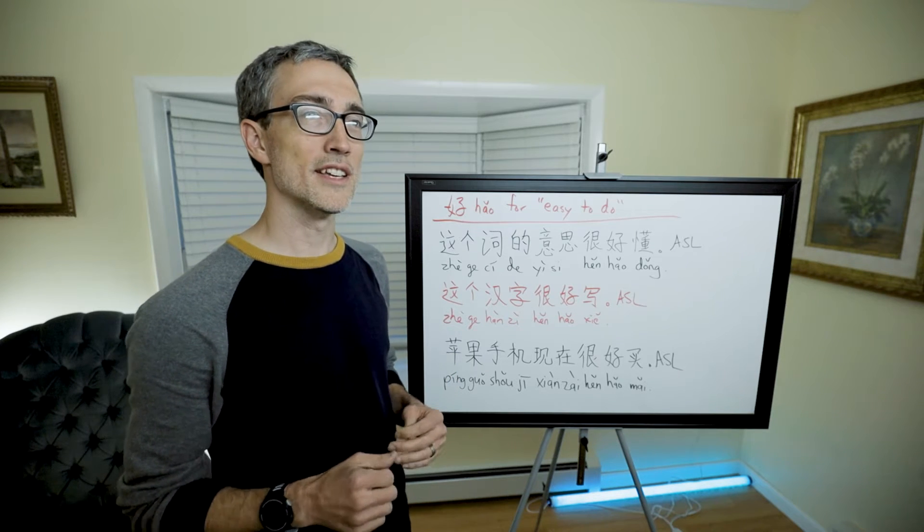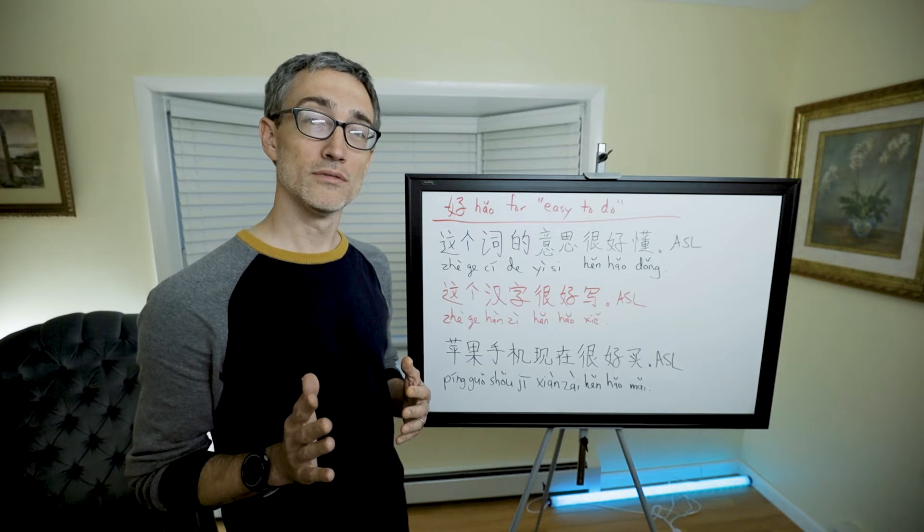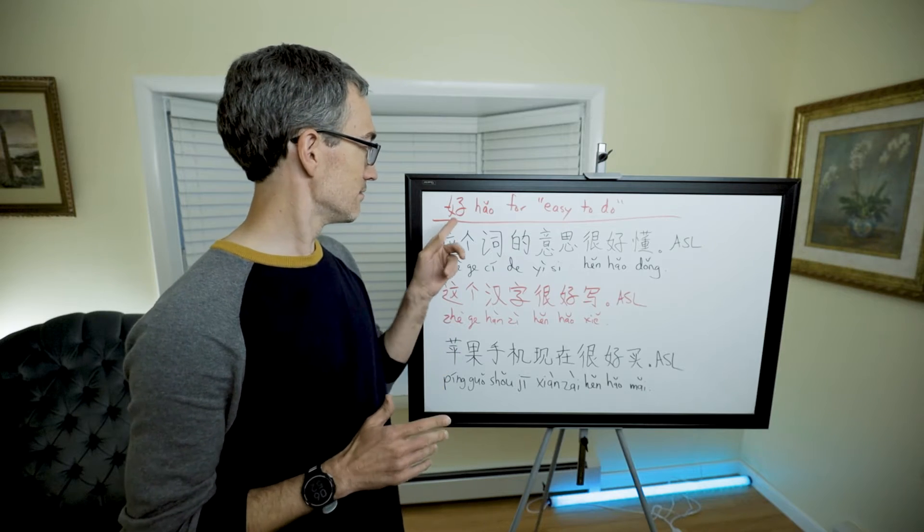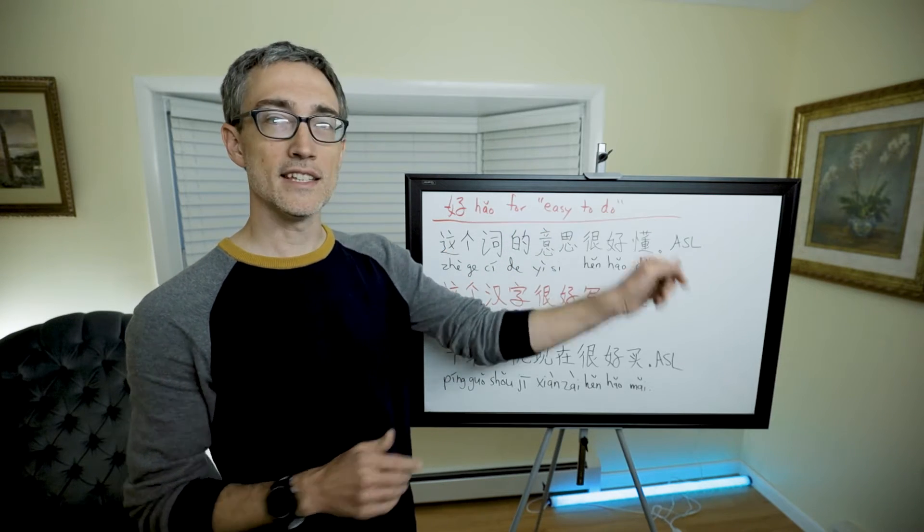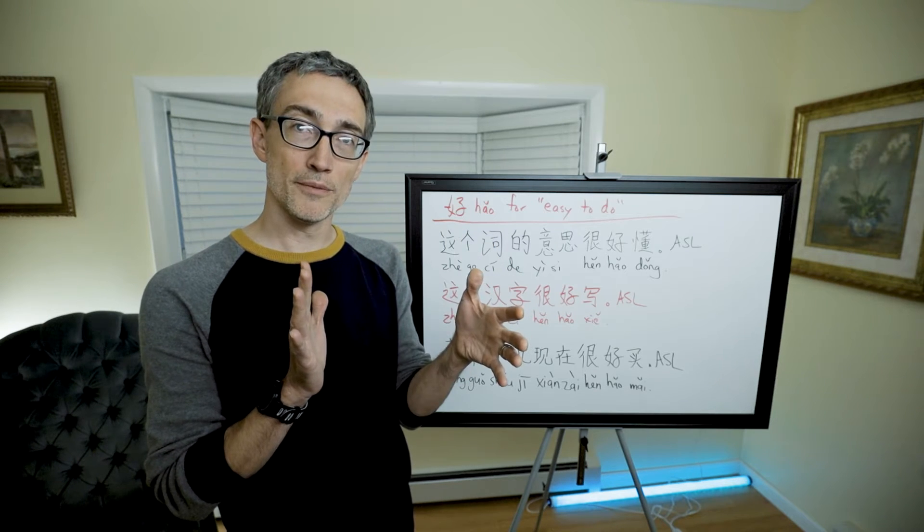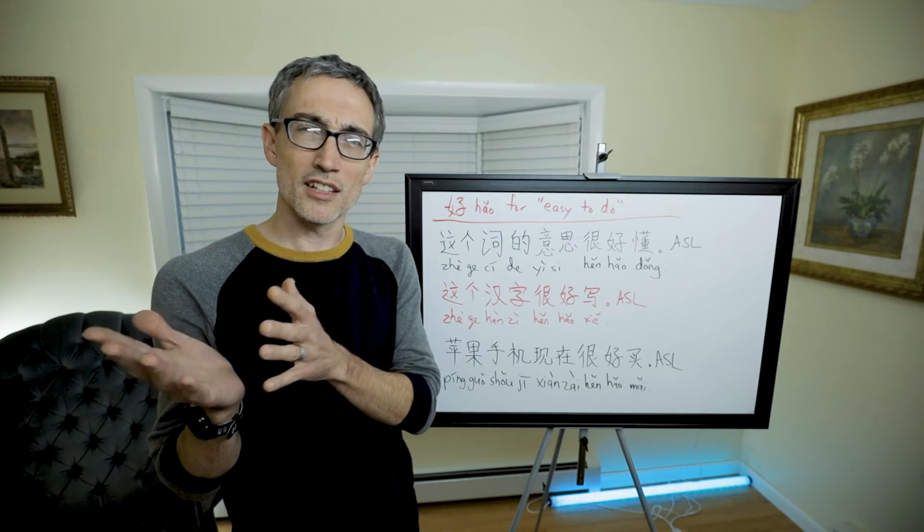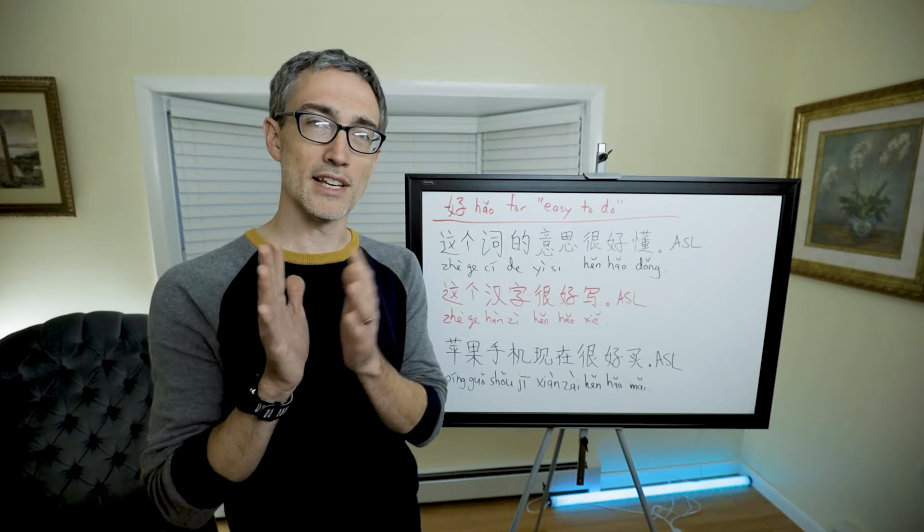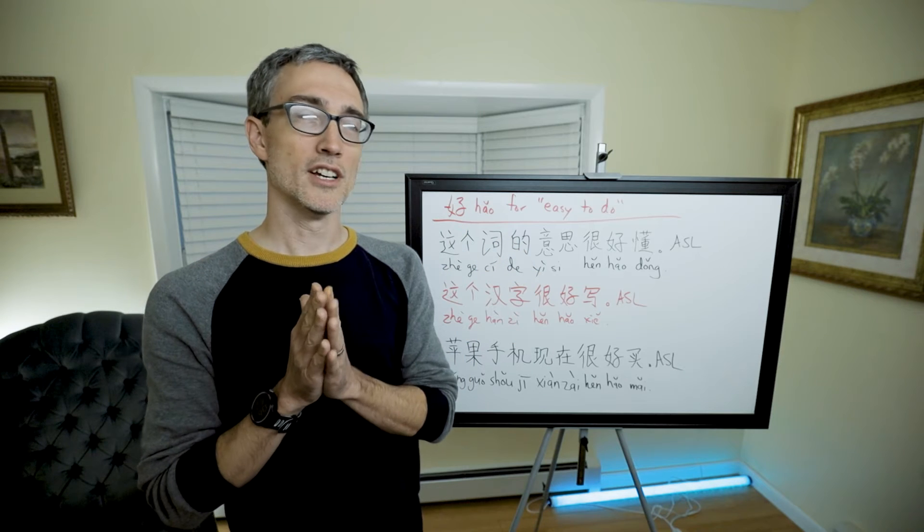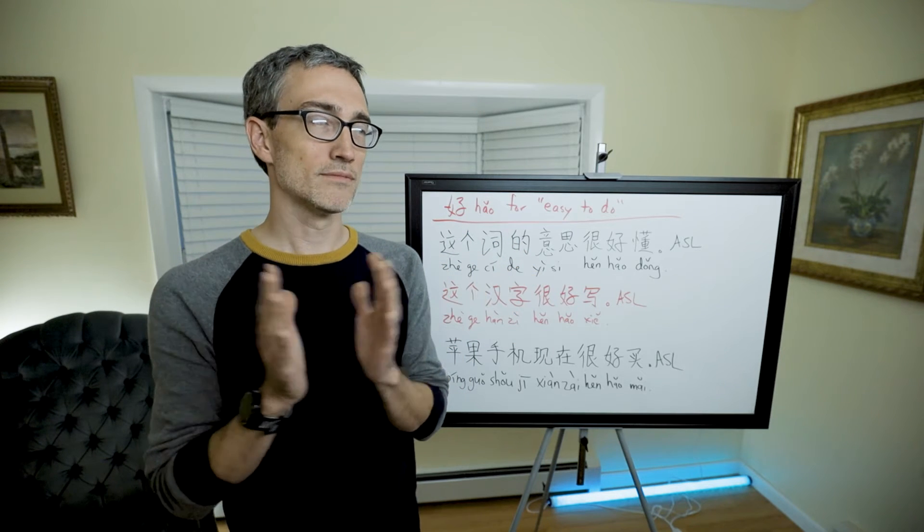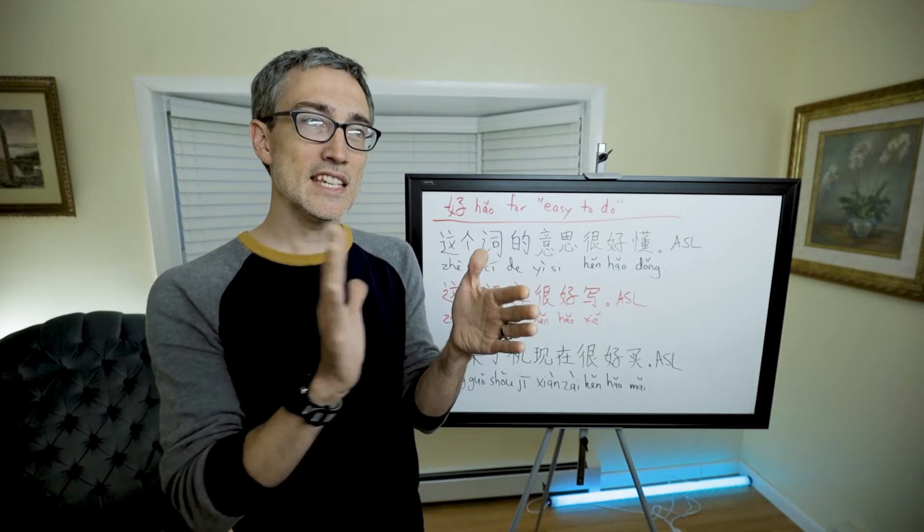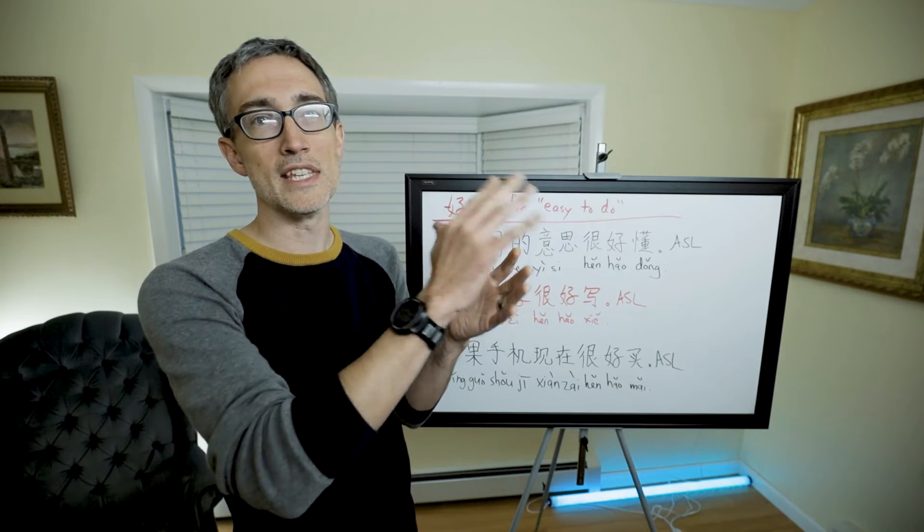The first one is how to use a very familiar word in a different way: how to say easy to do. The way it works is you put the word 好 before a verb. Usually it's 很好 as you'll see in these examples, because Chinese likes to put 很 before a predicate adjective. But you put 好 before a verb and it means easy to do that verb.